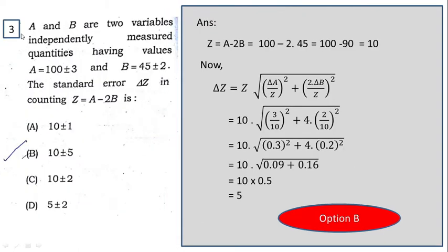This is question number three. Here A and B are two variables, independently measured quantities having values A equal to 100 plus minus 3, B equal to 45 plus minus 2, and we have to find out the standard error del Z for Z equal to A minus twice B. Let's find the value of Z. So Z is A minus twice B, so the value of A is 100, so 100 minus 2 into B is 45, that is 100 minus 90 equal to 10. So all the first three options have 10 value, but the last one has 5, so this is not correct.